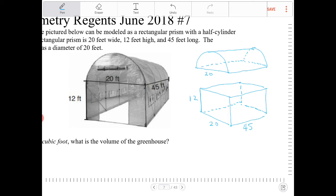With that understanding, the radius of the semicircular base of the greenhouse is going to be 10. The length of the half-cylinder is going to be equivalent to the rectangular prism, and that's going to be 45.